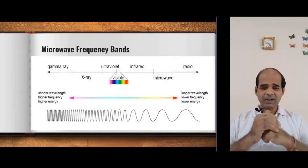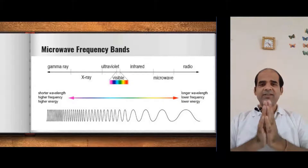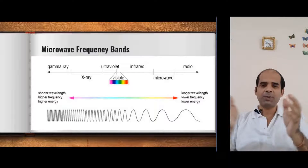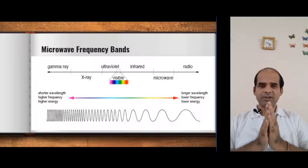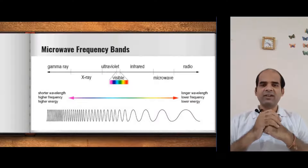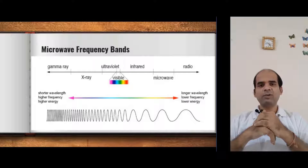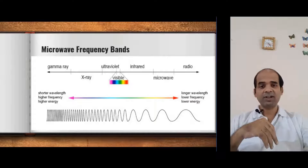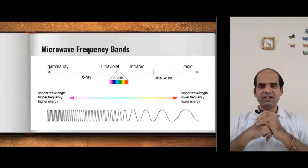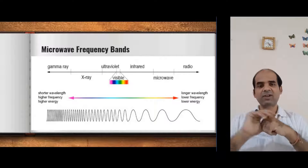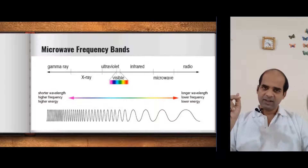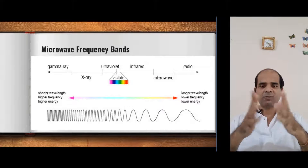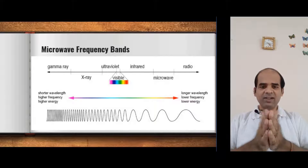The frequency band is ranging in between infrared rays and radio waves. In human technology we are working from gamma rays to radio waves. If it goes towards gamma rays, the frequency goes on increasing; if it goes towards radio waves, the frequency goes on decreasing. Conversely, wavelength increases towards radio waves and decreases towards gamma rays. Our microwave band falls in between infrared rays and radio waves.